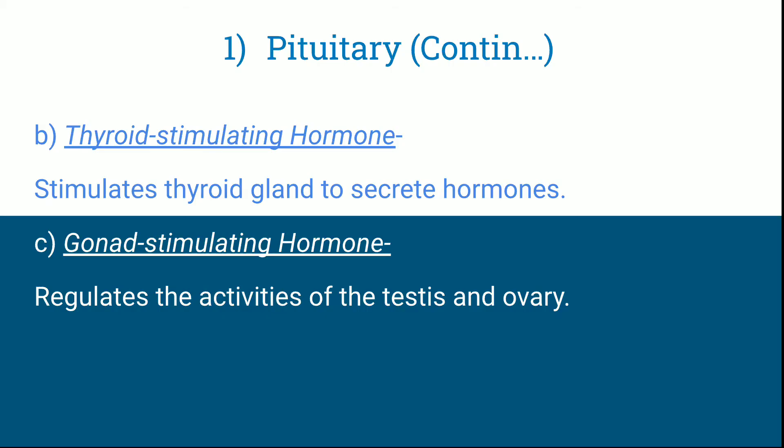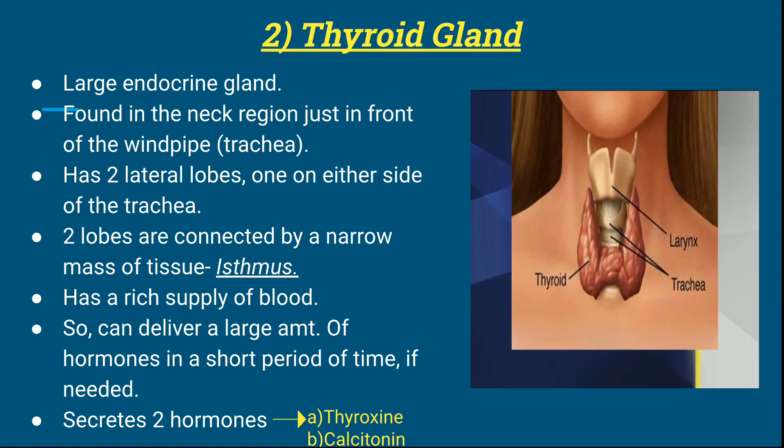The thyroid stimulating hormone stimulates the thyroid gland to secrete its hormones. The gonad stimulating hormone regulates the activities of the testes and ovaries. Gonads refer to the testes and ovaries, and their activities are regulated by the gonad stimulating hormone.